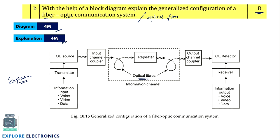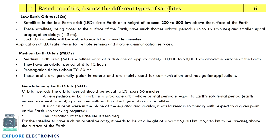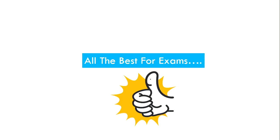Based on orbits, discuss different types of satellites. There are three categories: low earth orbit (LEO), medium earth orbit (MEO), and geostationary earth orbit (GEO) satellites, each for two marks, totaling six marks. For each type, write the orbital height and a comparison — presenting all three with the same comparison parameters makes it easy to score full marks. So all the best for your examinations, thank you.